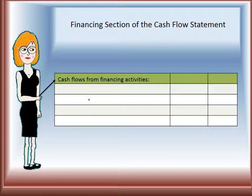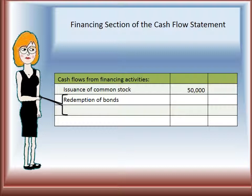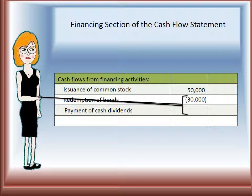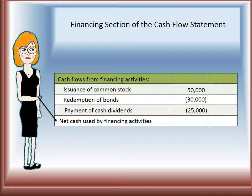In our example, we have cash flows from financing activities. We have issuance of common stock, which is a positive amount since we're selling that. Negatives would be redemption of bonds — paying off bonds payable — and payment of cash dividends to the investors, for $30,000 and $25,000 respectively. Net cash used by financing activities would end up being negative $5,000.